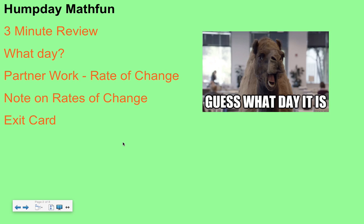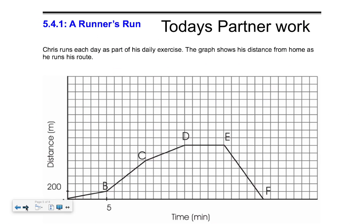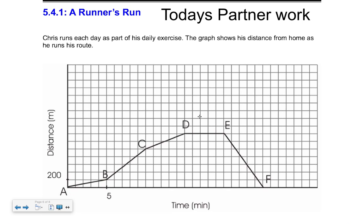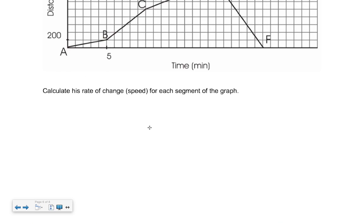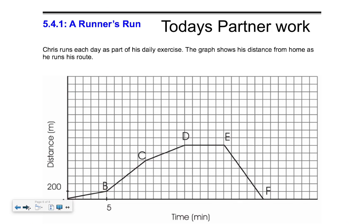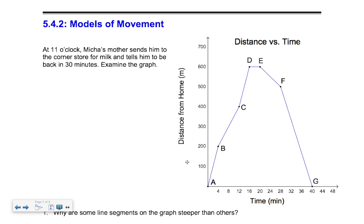I guess you're back and you've now celebrated the hump! Let's talk about the partner work today. I'm going to show you what the first sheet looks like — this is our note, we'll get back to that. There's this page and then there's a second page. What each one is asking you to do is calculate the rate of change — the rise over run — that we talked about yesterday, doing it for different sections of a line, which is a bit different.